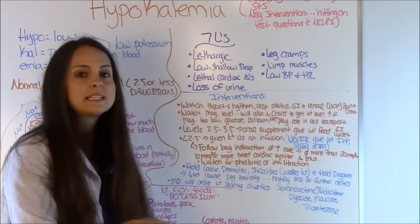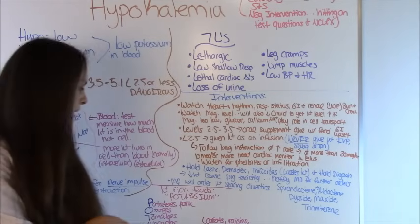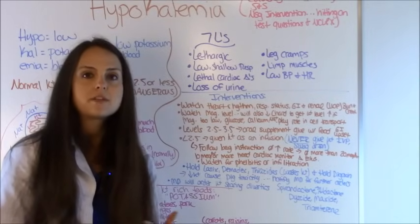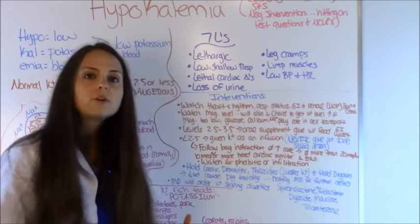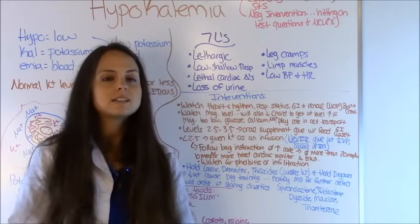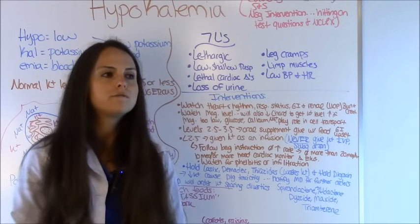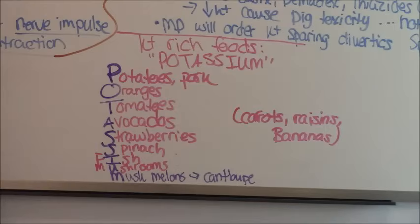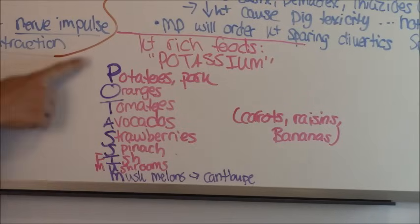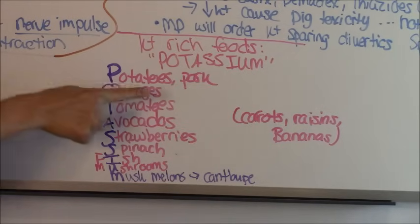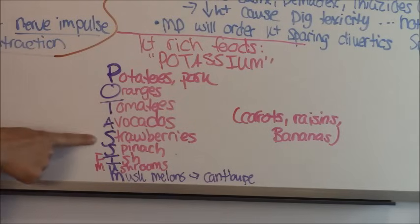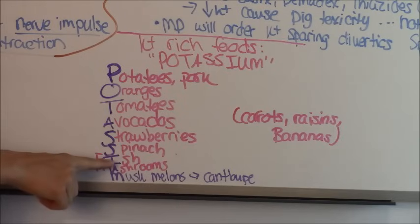Another step is to make sure your patient is getting enough potassium in their food. A clever way to remember potassium-rich foods is the word POTASSIUM itself, spelled out. P is for potatoes and pork, O for oranges, T for tomatoes, A for avocados, S for strawberries, the other S for spinach, and I — which stands for fish, F-I-S-H.